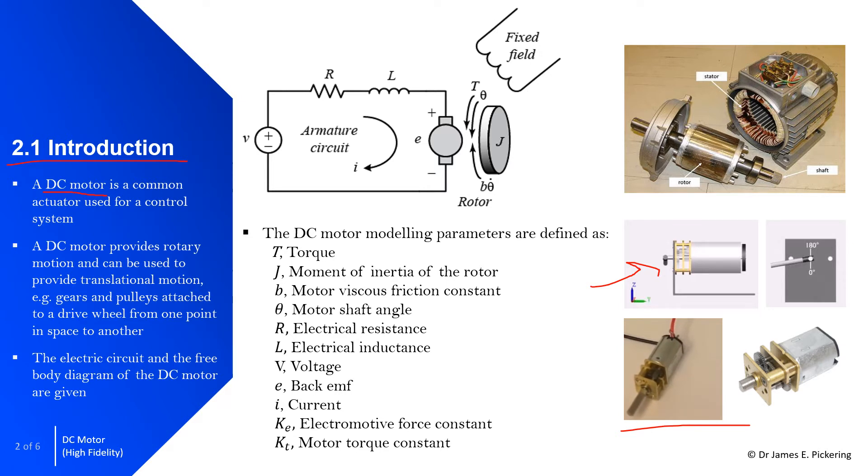But rotational motion, we could attach gears and a pulley to the shaft on this DC motor and it could be used to drive a wheel to effectively go from one point in space to another.